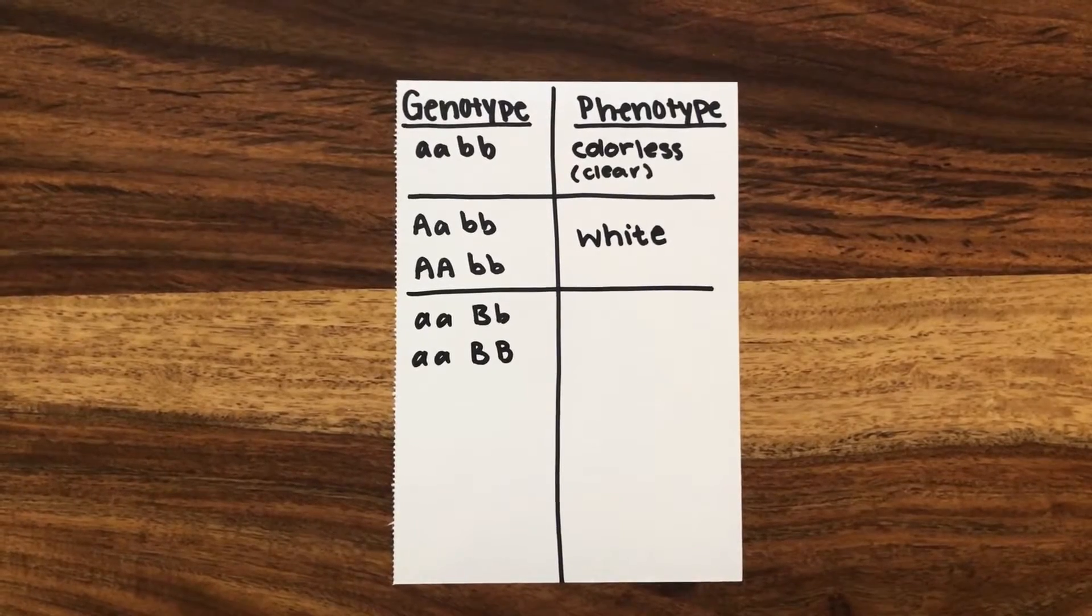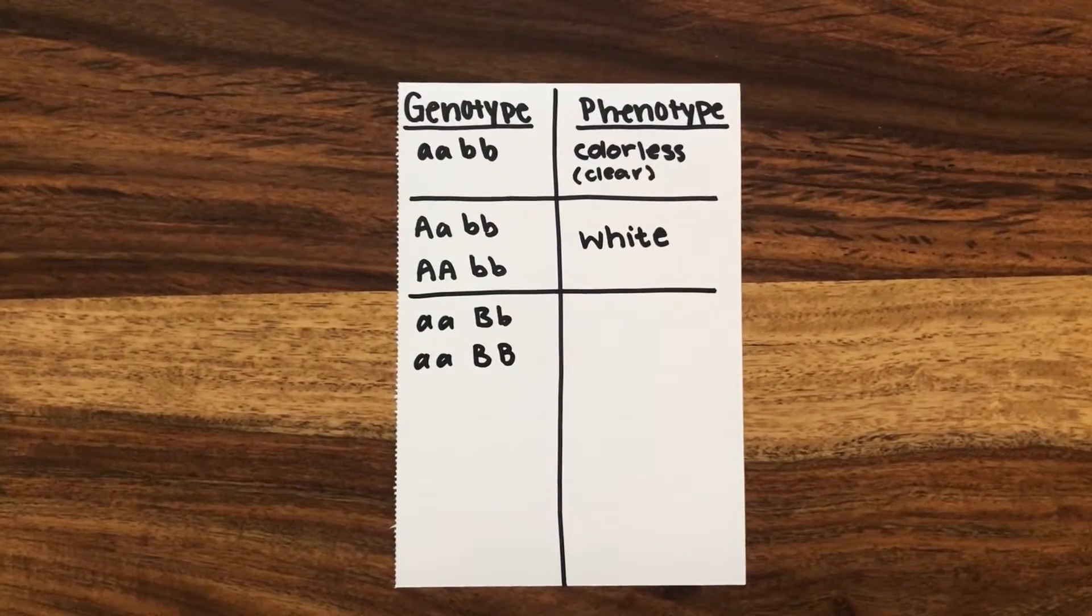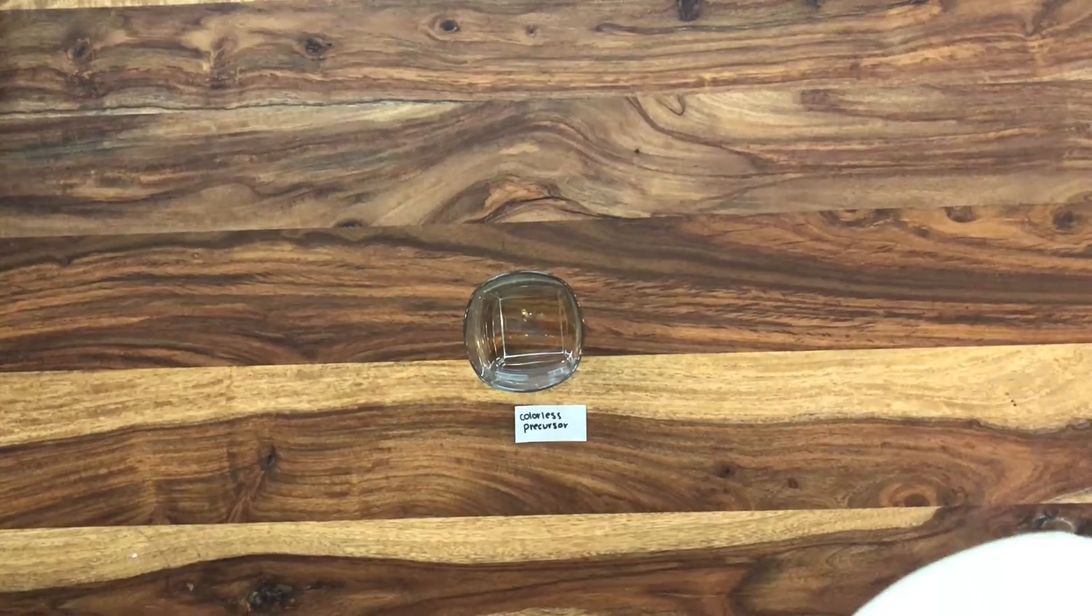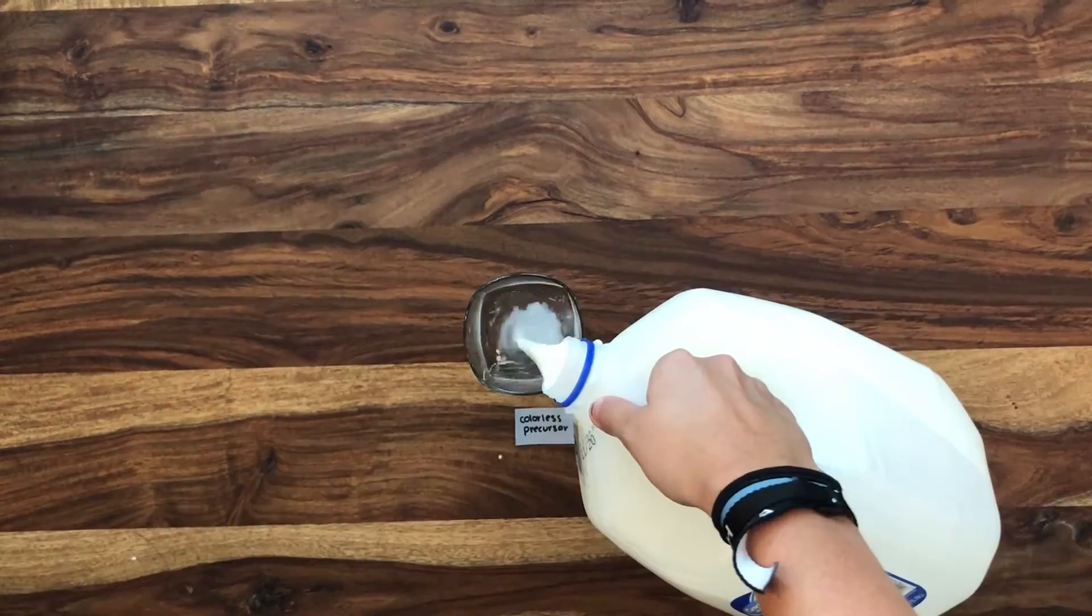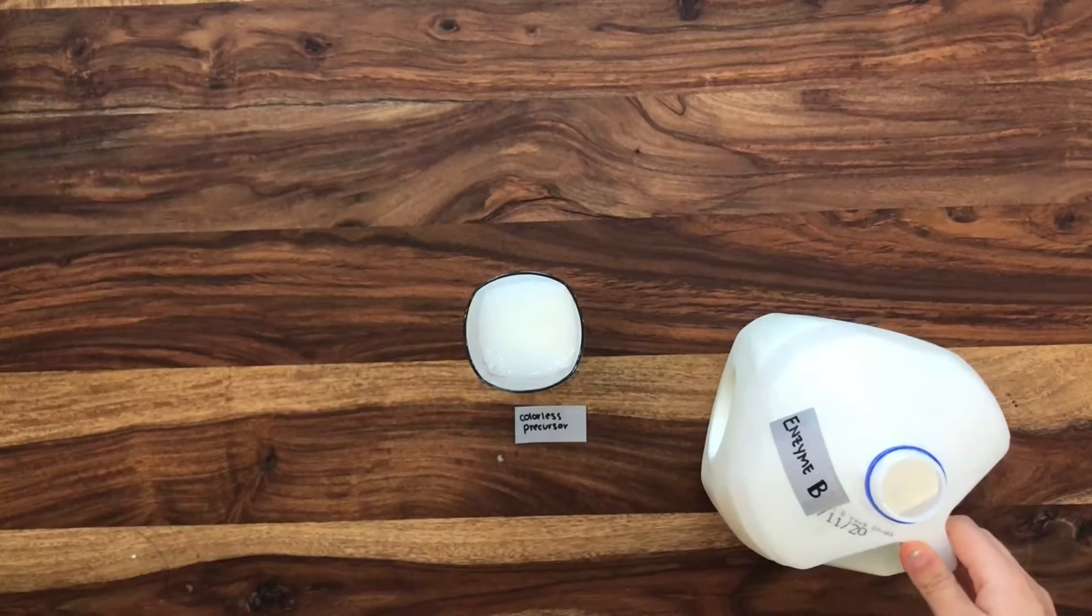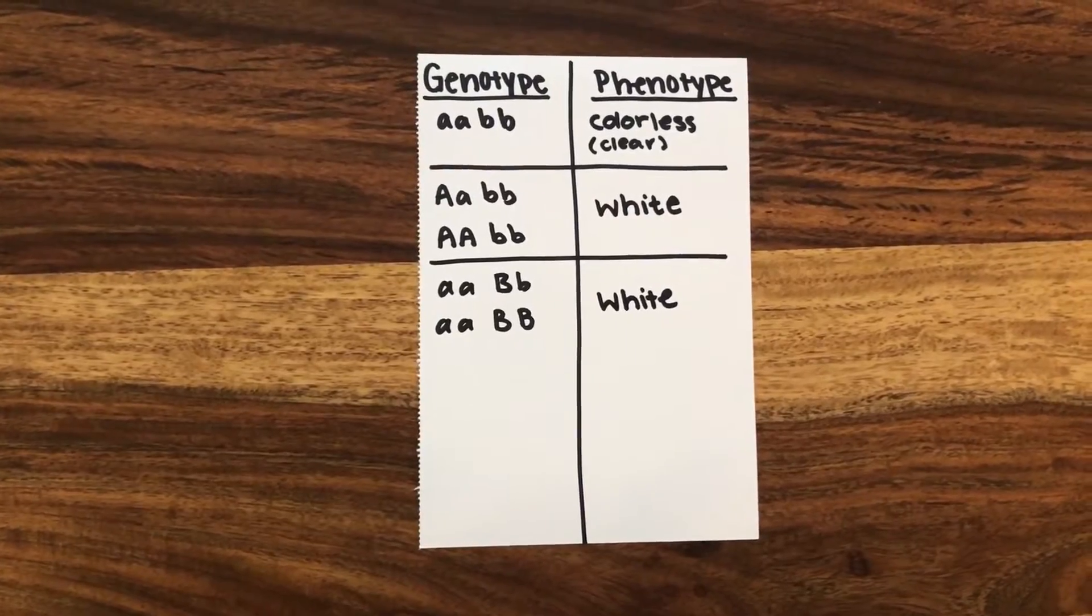Now let's say the uppercase A allele was not present, but at least one uppercase B allele is. Because the uppercase B allele is present, enzyme B, 2% milk, is produced in the individual. This produces the same white phenotype in the glass as enzyme A did.